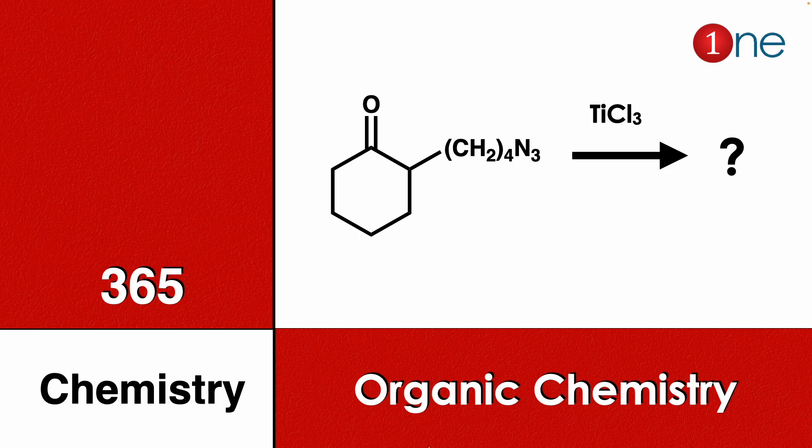Welcome to One Chemistry. This is the 365 Chemistry series of organic chemistry questions. Here you have cyclohexanone with a side chain of 4 carbons containing an azide group. You are using titanium trichloride as the reagent. Find what will be the final product.